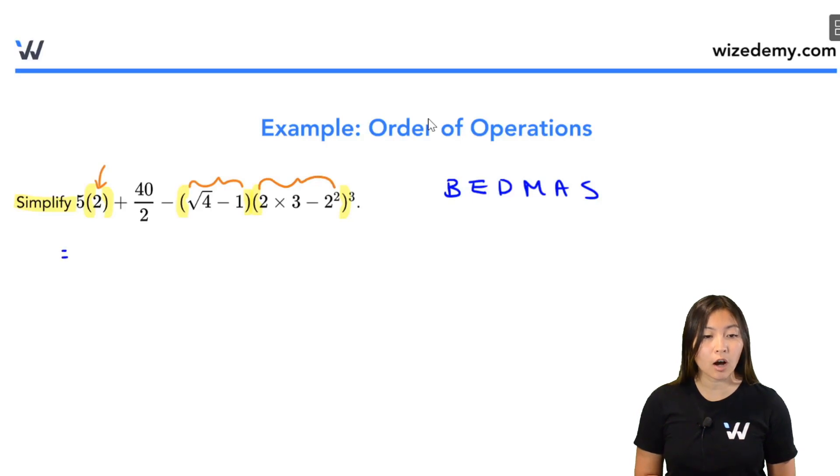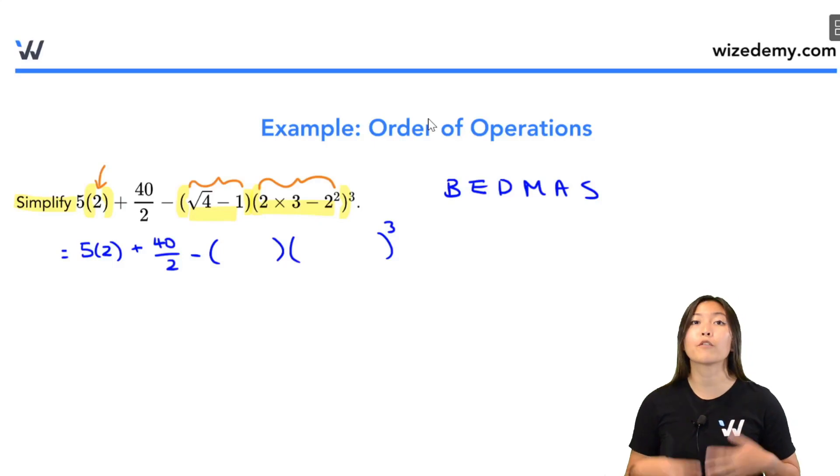So what I'm going to do is just copy everything out. And then within my two brackets here, my first bracket and my second bracket, I'm going to pause the video and have you simplify it. Now within each of these brackets, you want to follow BEDMAS as well. So deal with your exponents before division multiplication, before addition and subtraction. When you're ready, unpause the video.